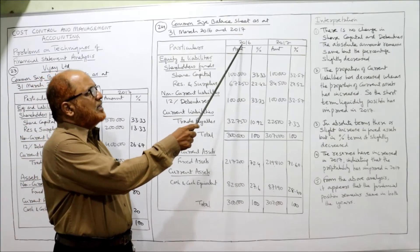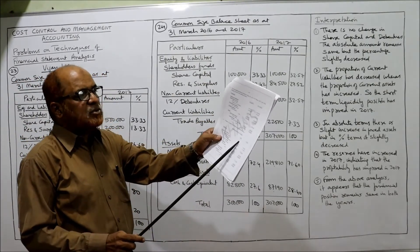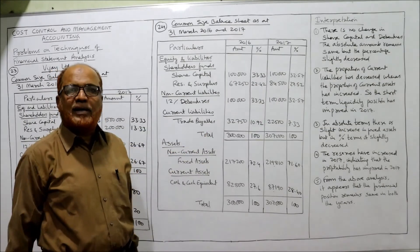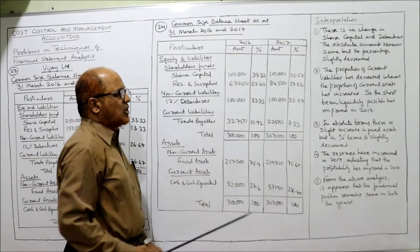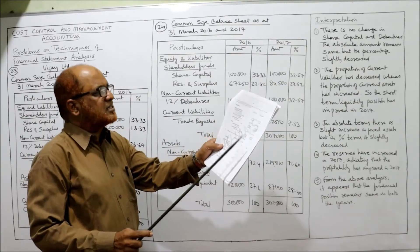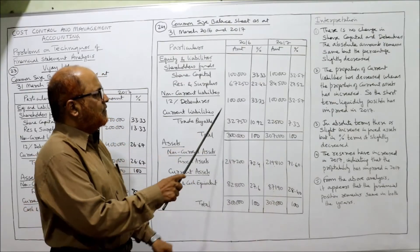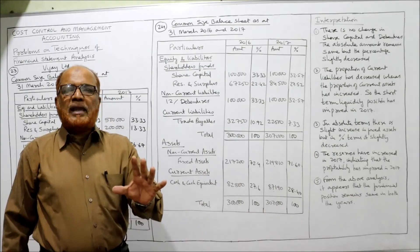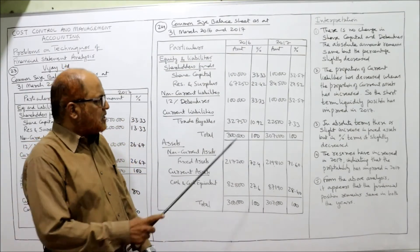In the problem, 2017 is given first, but we should take 2016 first and then 2017. Amount and percentage columns are given. The 2016 amounts are: 1 lakh, 67,250, then 1 lakh, 32,750 — exactly the same now. For the common size balance sheet, take the total as the base. What is the total? 3 lakh.